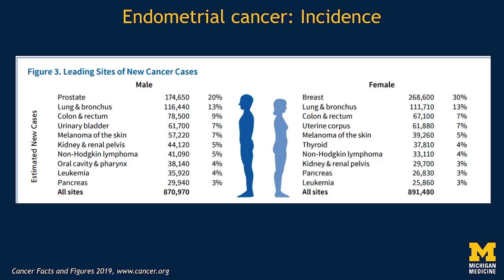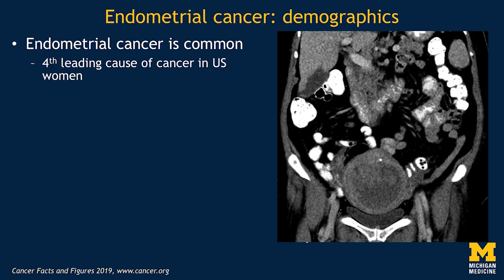Let's first talk about endometrial cancer. Looking at incidence in overall sites of new cancer cases in men and women, we see that uterine cancer, or endometrial carcinoma, is actually fourth among cancers in women. It's a lot more common than renal cancer, pancreatic cancer, lymphoma — a whole bunch of entities that we spend a lot of time teaching and learning about in residency. It's common, and it's particularly common in the United States. However, it's an often very survivable cancer — only the sixth leading cause of cancer death in U.S. women.